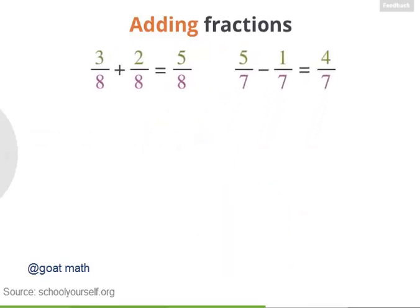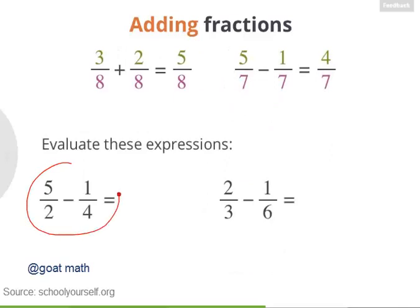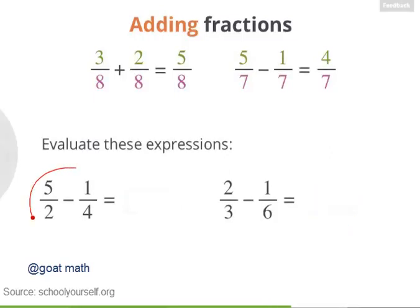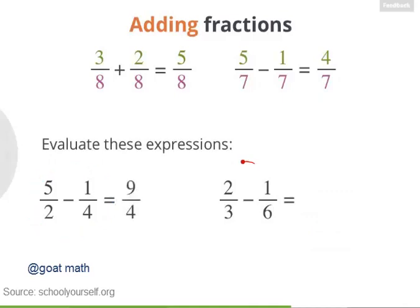Next, try two more examples: 5 halves minus 1 fourth and 2 thirds minus 1 sixth. For these, you'll want to rewrite some of the fractions so they have the same denominator. Nicely done. 5 halves minus 1 fourth equals 9 fourths. And 2 thirds minus 1 sixth equals 3 sixths, which you can simplify to 1 half.